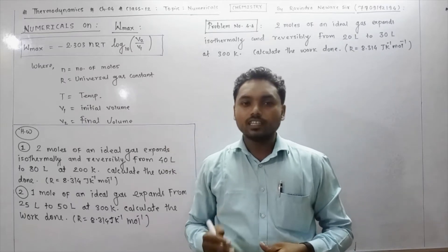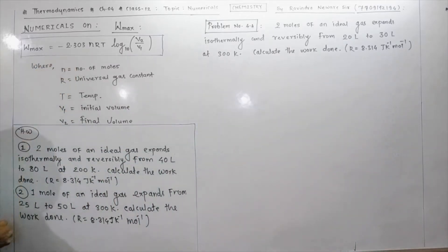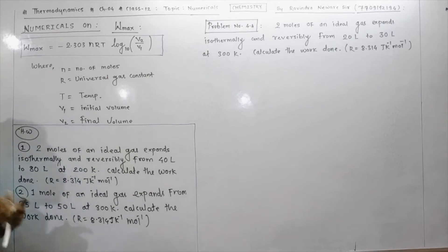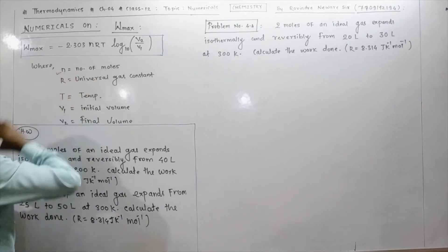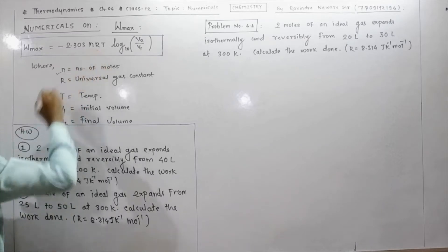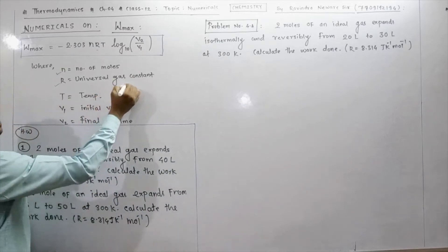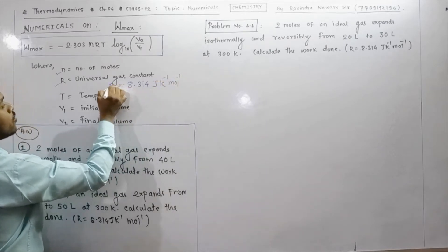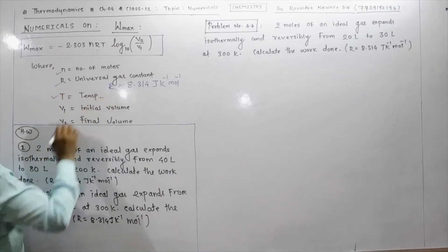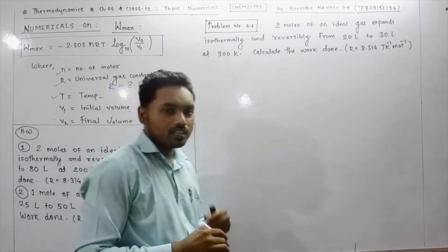In this formula, Wmax means maximum work done. n is the number of moles, R is the universal gas constant with a value of 8.314 Joule K⁻¹ mol⁻¹, and T is the temperature. V1 is the initial volume and V2 is the final volume. These are the terminologies given in the formula.